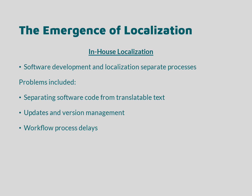This two-part process was often problematic, not least of all because localisation as a process was still not yet well defined. There were often difficulties in separating the translatable text from the software code, and this would mean that the software developers would have to adapt the code in certain places in order to extract the translatable text.